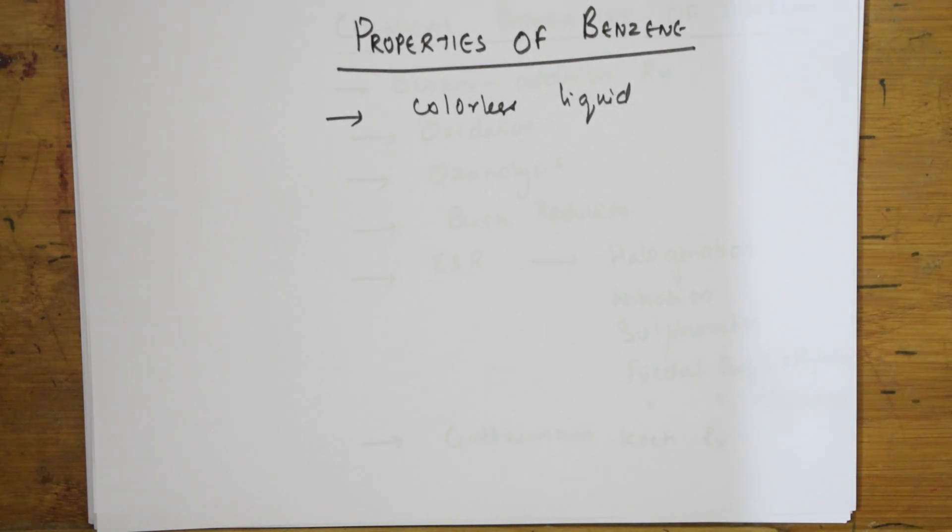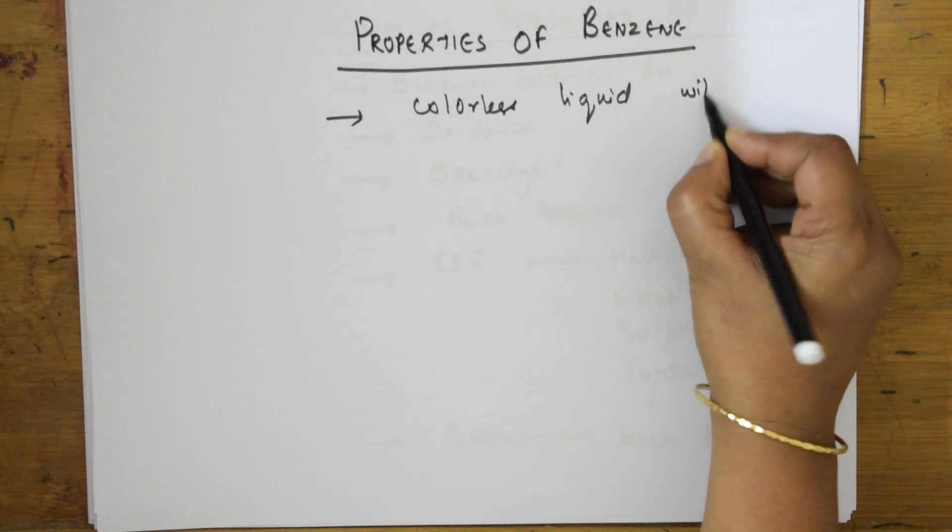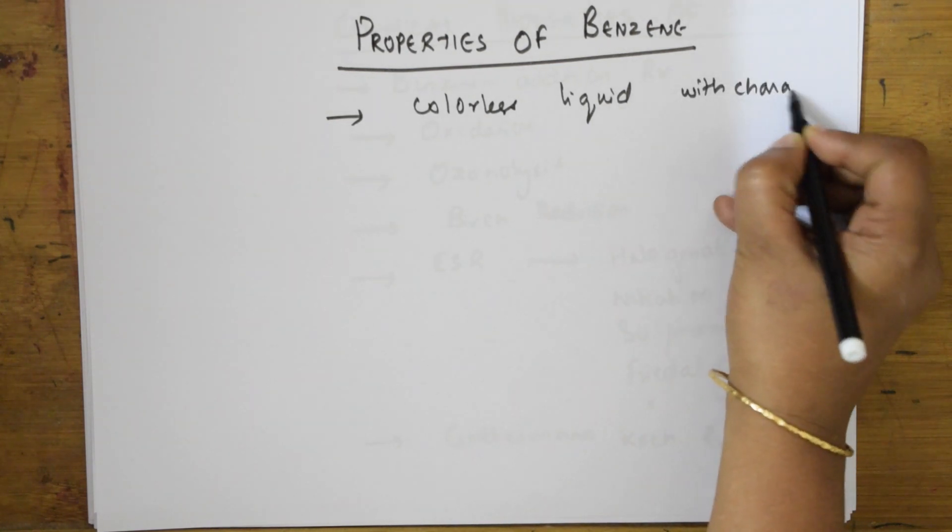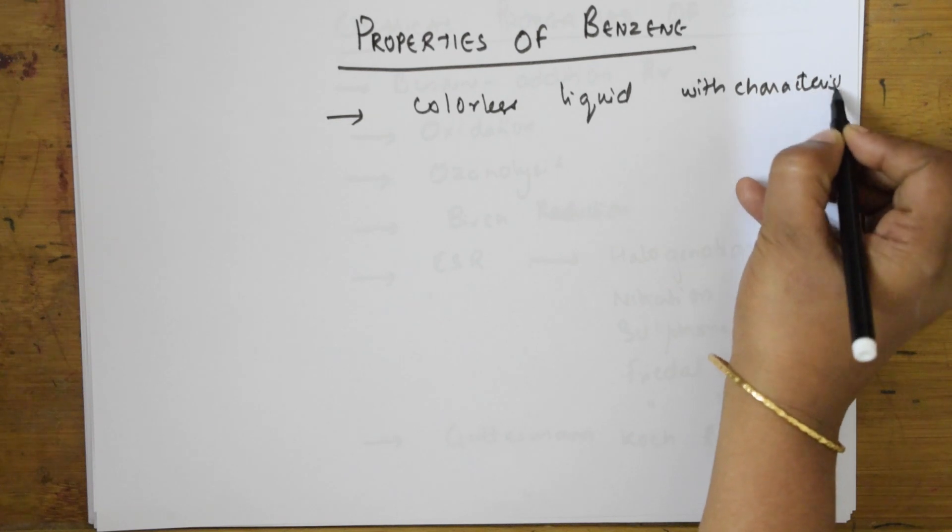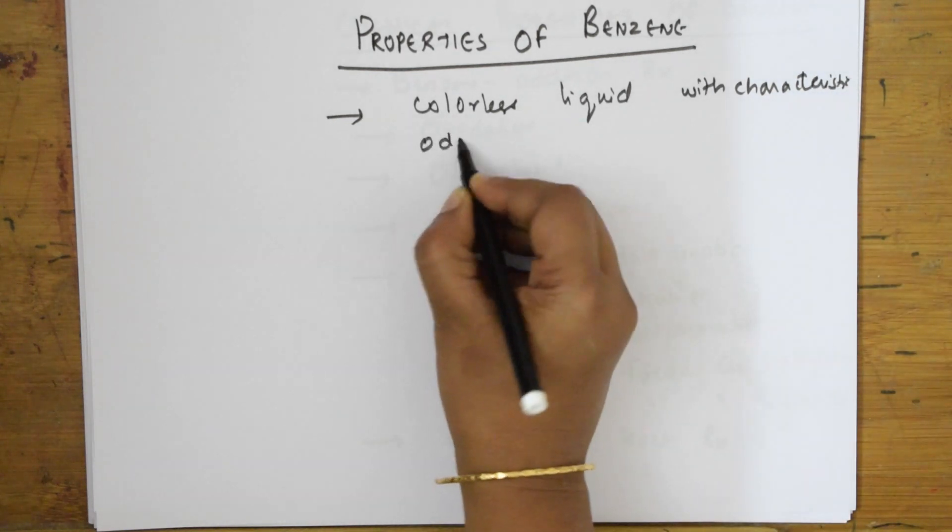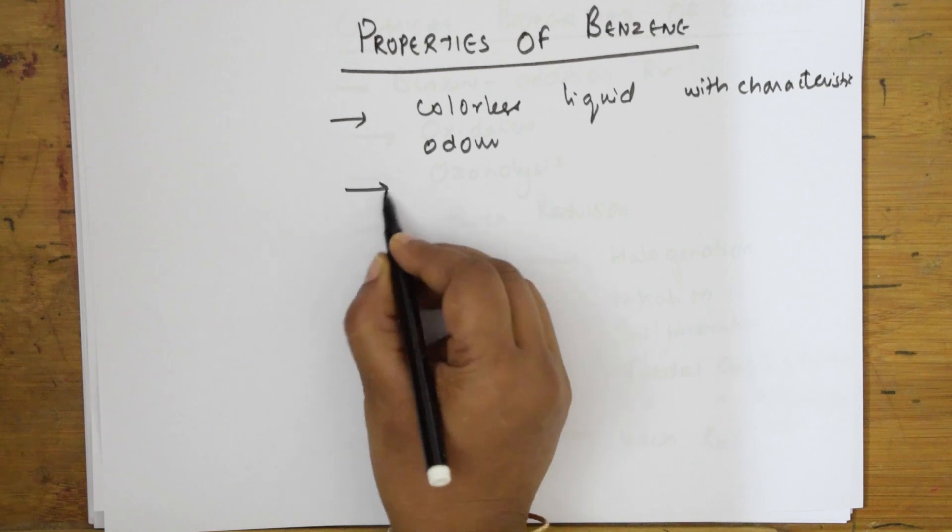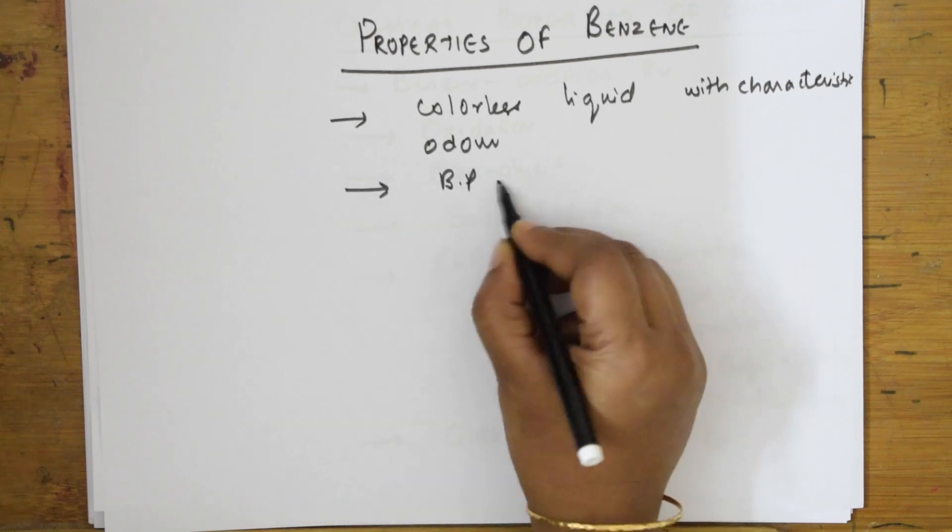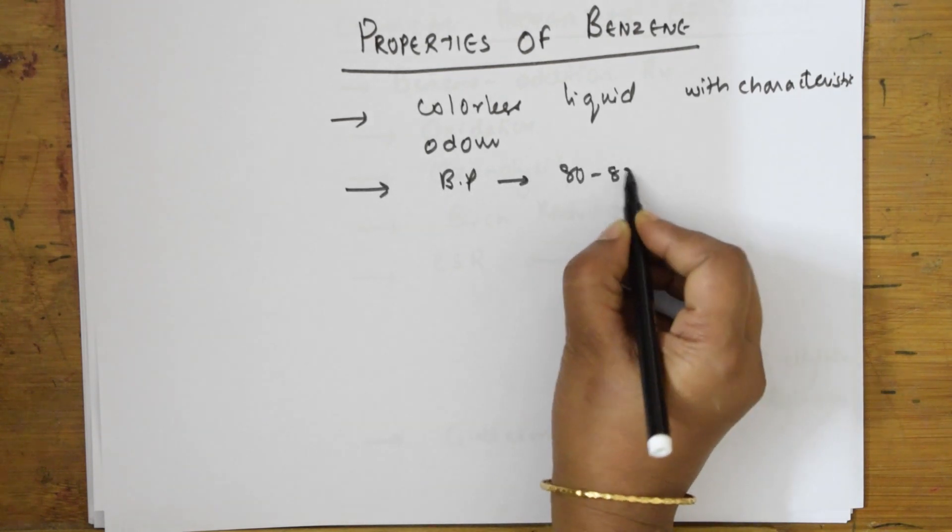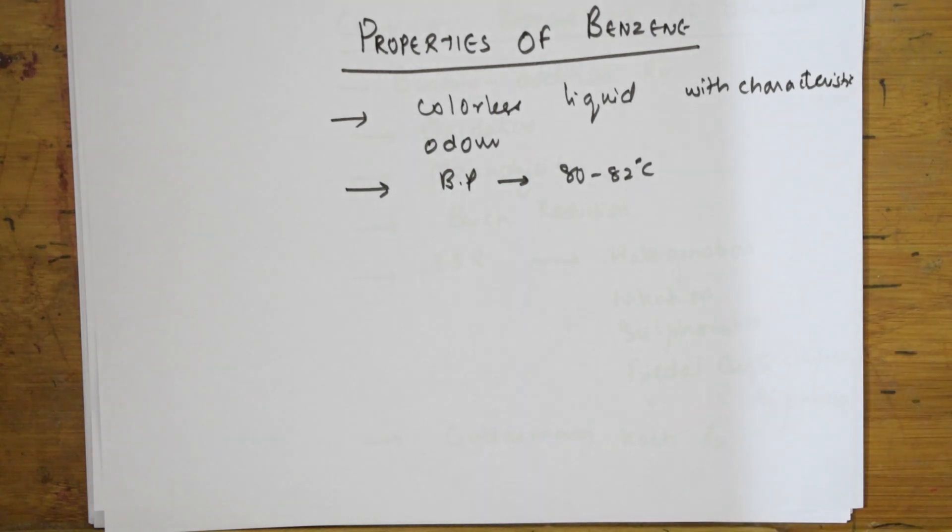Colorless liquid with characteristic odor. What is the boiling point of benzene? Benzene boiling point is 80 to 82 degrees Celsius. That's why in distillation, before 80 degrees only we have got the benzene - it starts boiling and vaporizing.